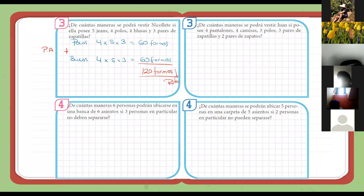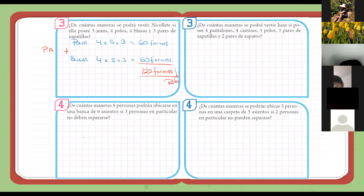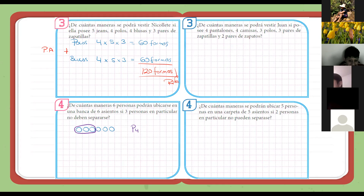Bien, siguiente ejercicio. Ejercicio número cuatro. Dice: ¿de cuántas maneras seis personas podrán ubicarse en una banca de seis asientos si tres personas en particular no deben separarse? Son tres amigos que no quieren separarse. Acá vamos a hacer un pequeño grafiquito. Una, dos, tres, cuatro, cinco y seis. Estos tres dicen que van a estar siempre juntos. Entonces, vamos a tomarlos como si fuera una sola persona. Las posibilidades, de morado, sería permutación de cuatro, ¿ya? Permutación de cuatro.